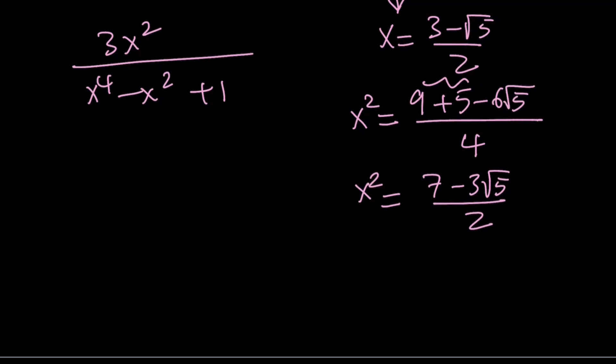14 minus 6 root 5. If you divide everything by 2, you're going to get 7 minus 3 root 5 over 2. So when you square something that has a square root of 5 in it, any power of that number is always going to have square root of 5 in it. That's x squared.